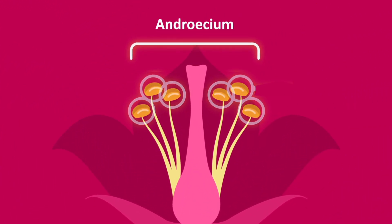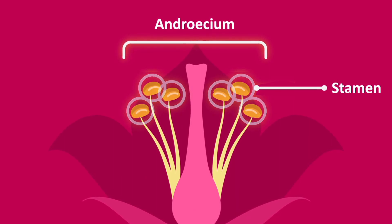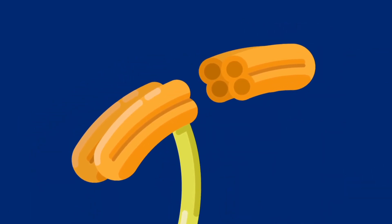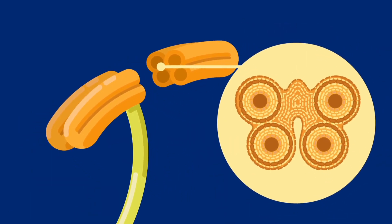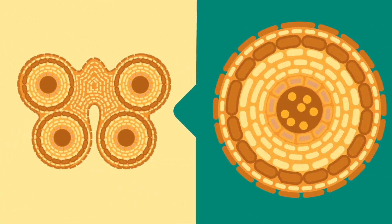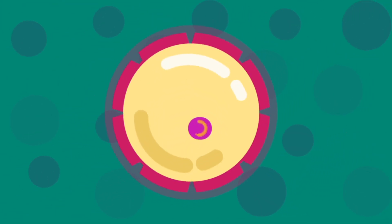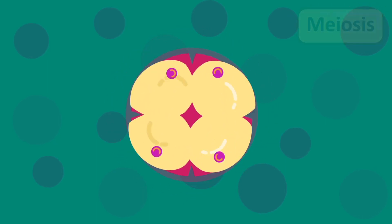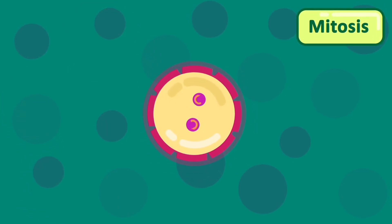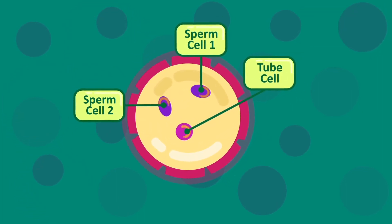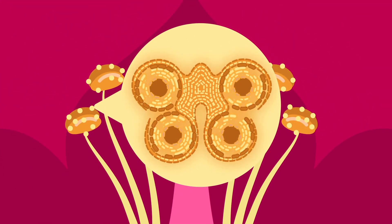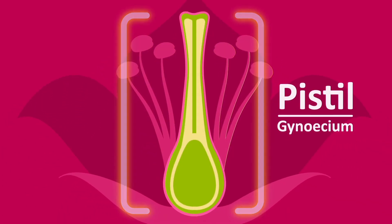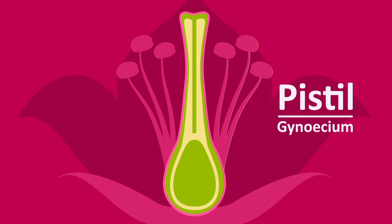The androecium is the collective name for the stamens of a flower that produces pollen grains. It consists of a filament bearing an anther. The anther is usually made up of two lobes, each containing two pollen sacs. The pollen sacs contain pollen grains, which are produced by meiosis and so contain the haploid number of chromosomes. Each pollen grain gives rise to two haploid male gametes, which are the reproductive nuclei of the flower. When the anther matures, its lobes split, setting free the pollen grains.